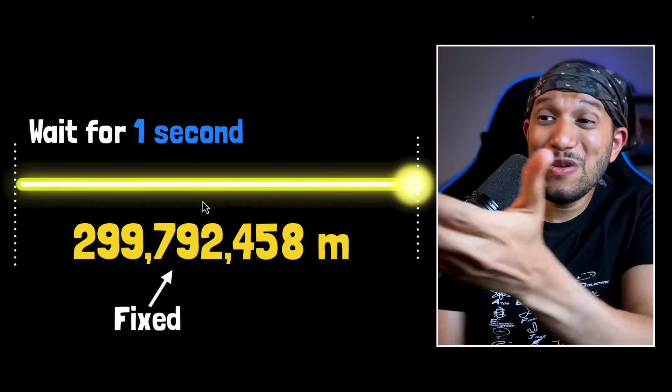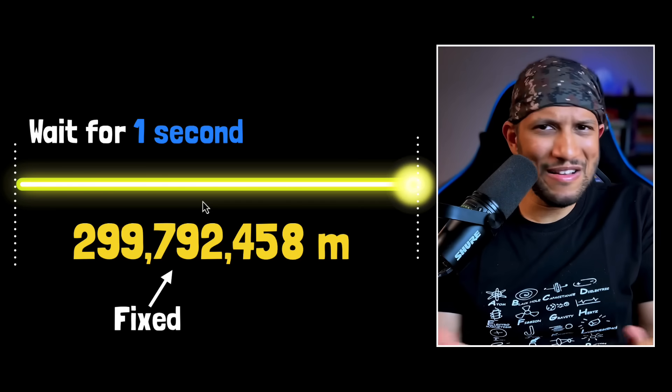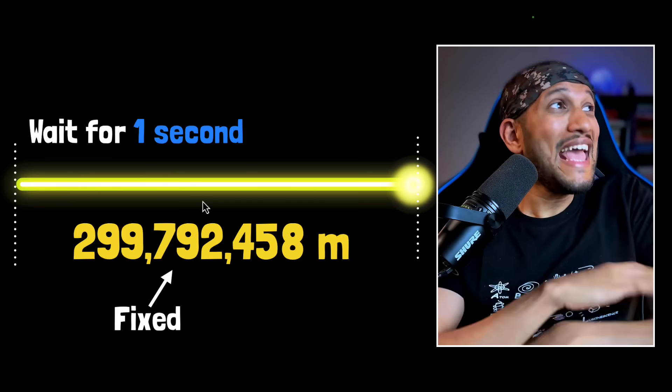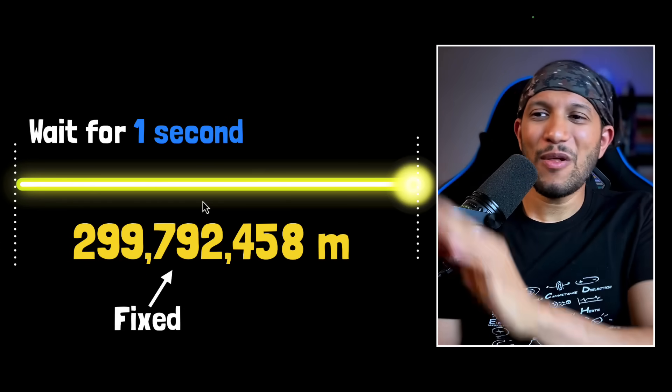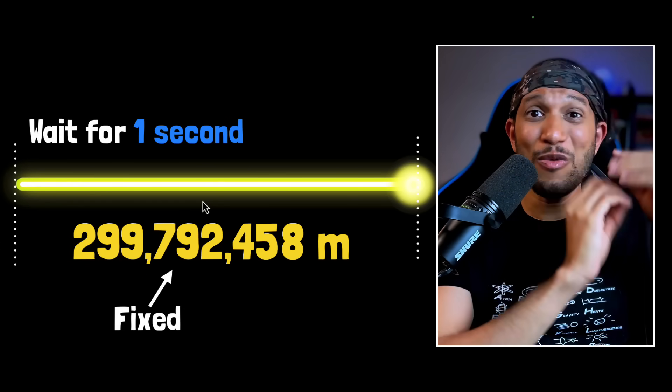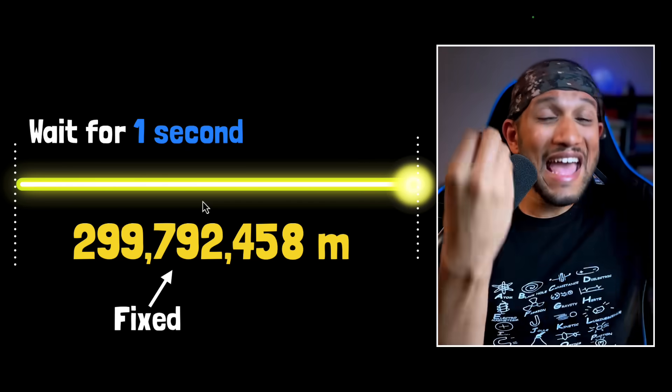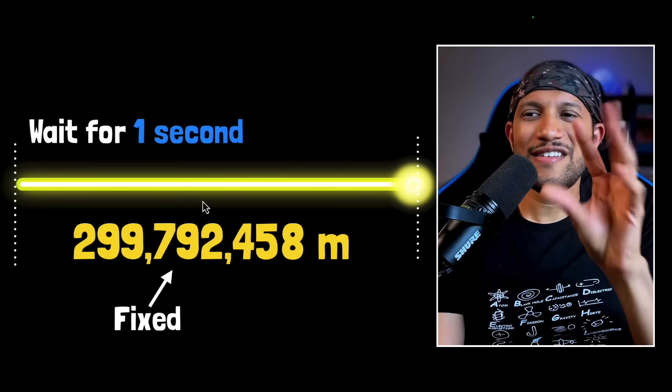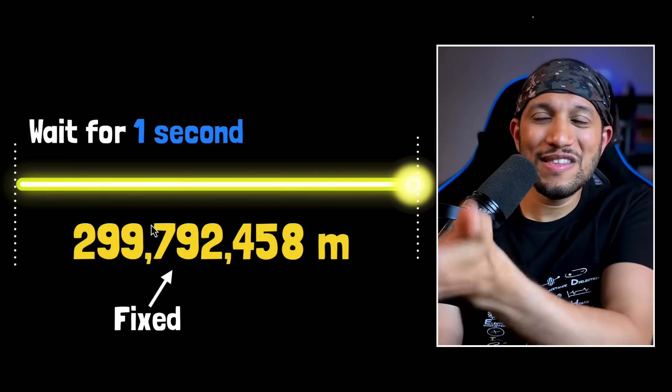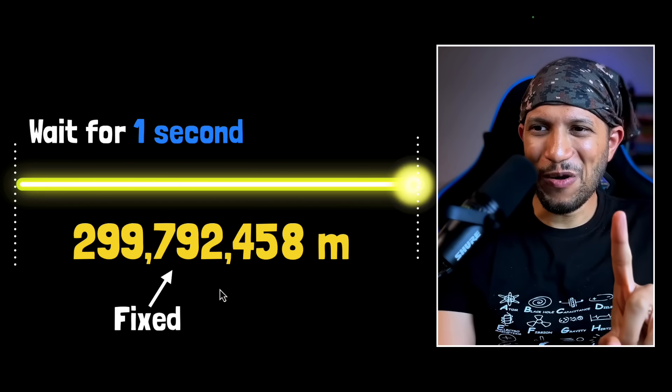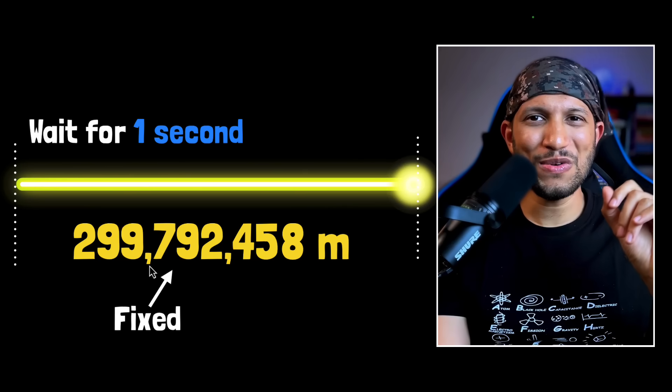But why? Why are we using speed of light to define our meter? Well, because speed of light in vacuum is a fundamental constant. Speed of light in vacuum does not depend upon any reference frames, which is awesome, which means anybody who does this experiment will always get the same value, and therefore, tomorrow, if we lost our meter sticks, anyone can recreate our meter stick by using this definition of the meter.